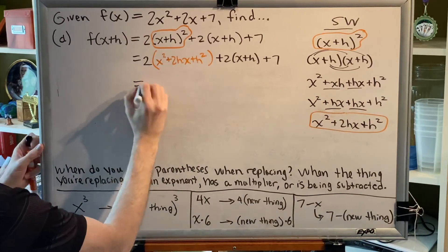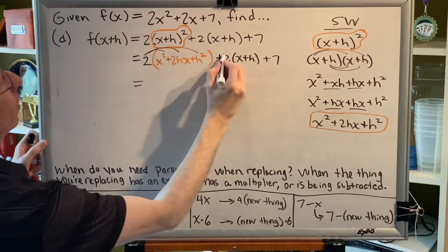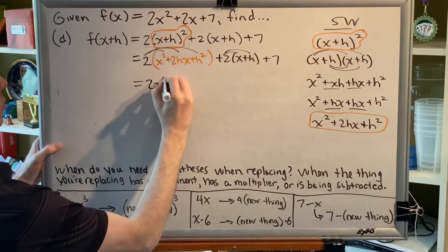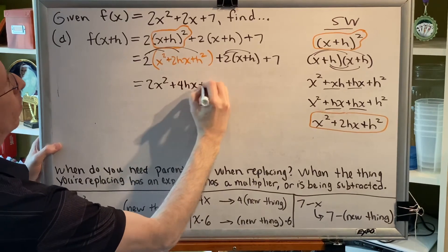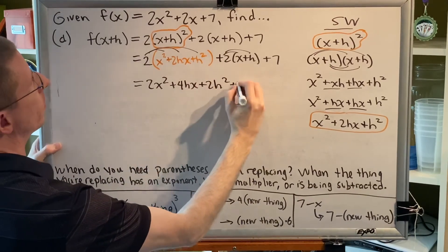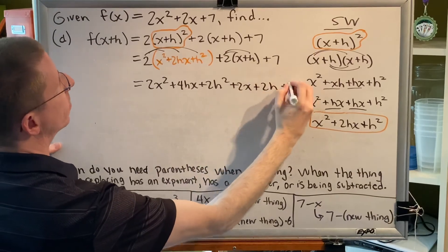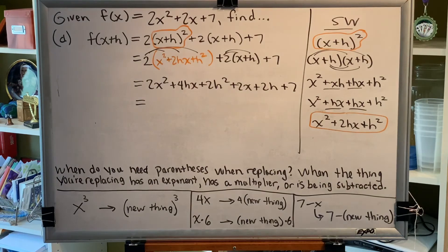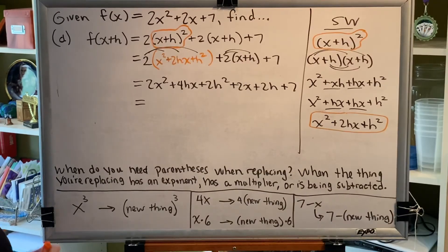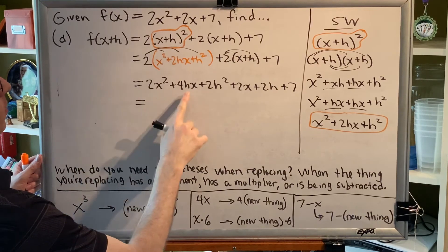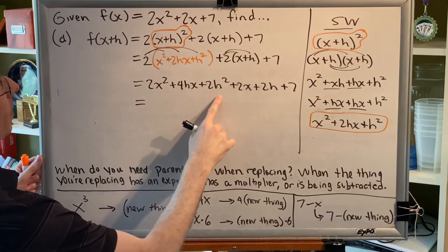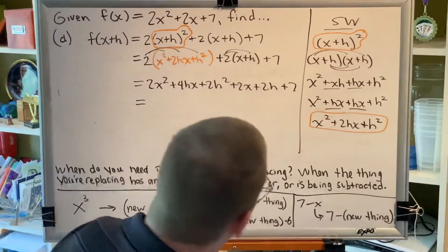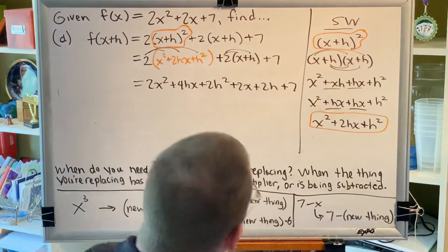Alright, now we're ready to continue. Let's use the distributive property twice. Here, and here. Notice that nothing gets distributed to the seven. So we have 2x² + 4hx + 2h² + 2x + 2h + 7. Alright, now we're looking for like terms. Like terms are terms that have the same variable part. Well, this term's variable part is x². This one is hx. This one is h². This one's just an x, just an h, and no variable at all. They're all different. So what that means is that this is actually my final answer.